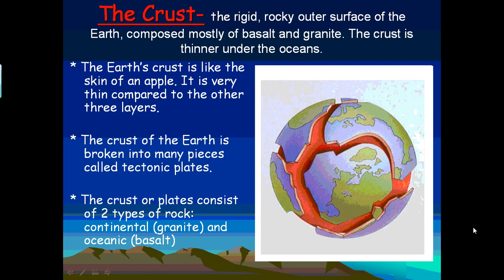Starting with the crust, the very top part, the crust is the rigid, rocky outer surface of the Earth, composed mostly of basalt and granite, which are types of igneous rocks.